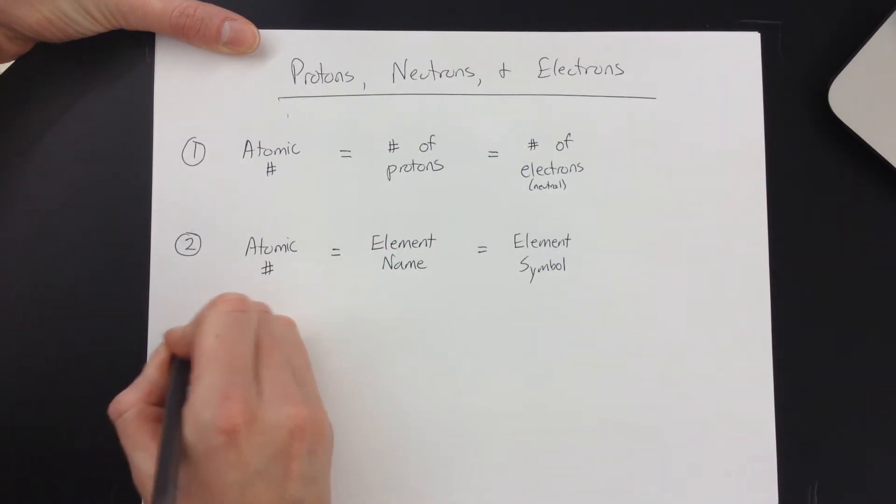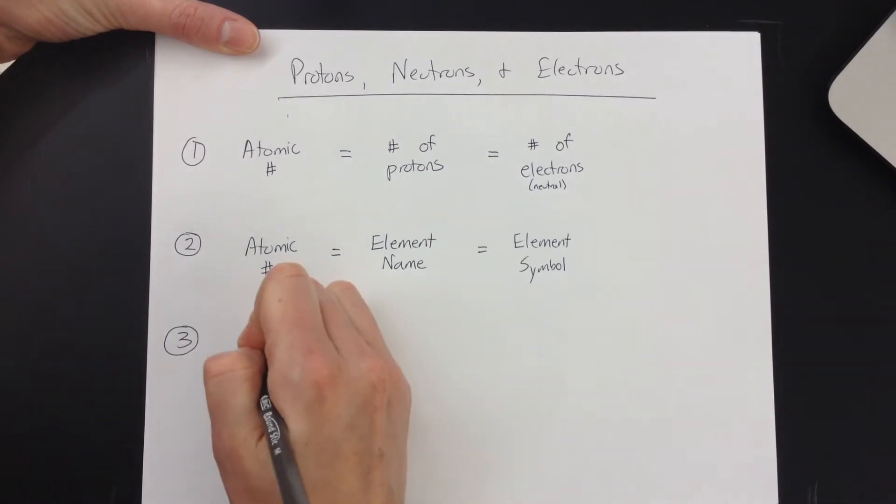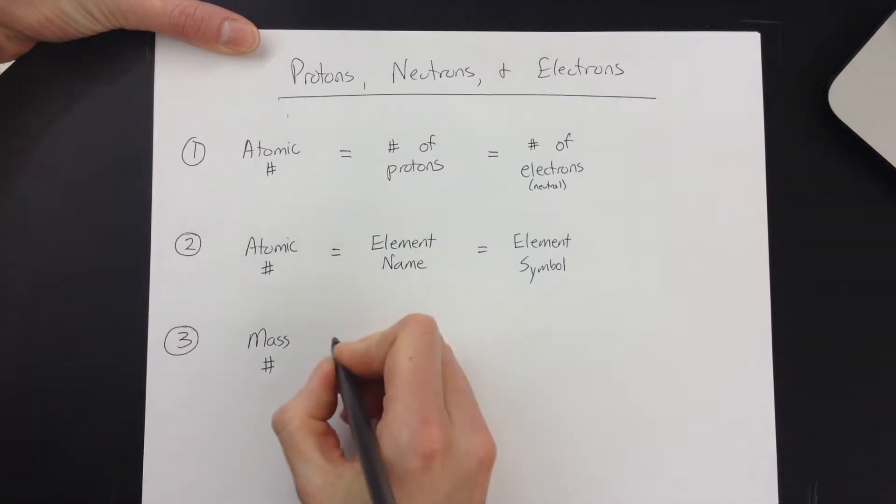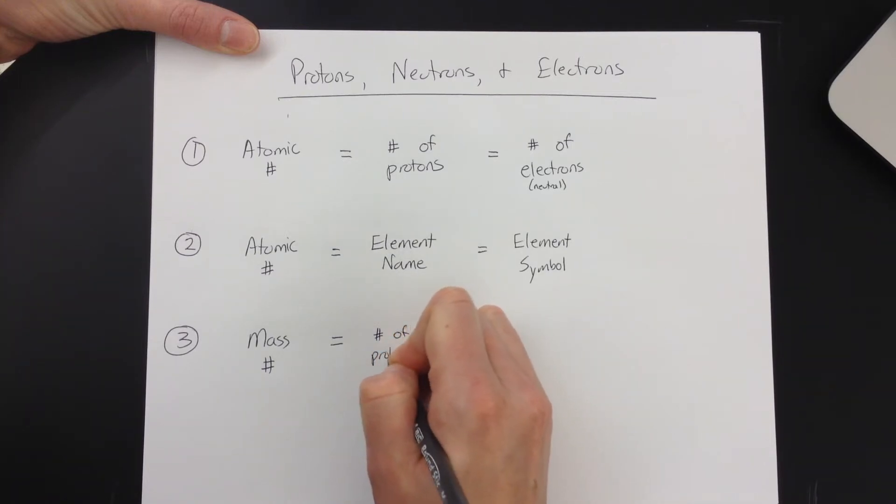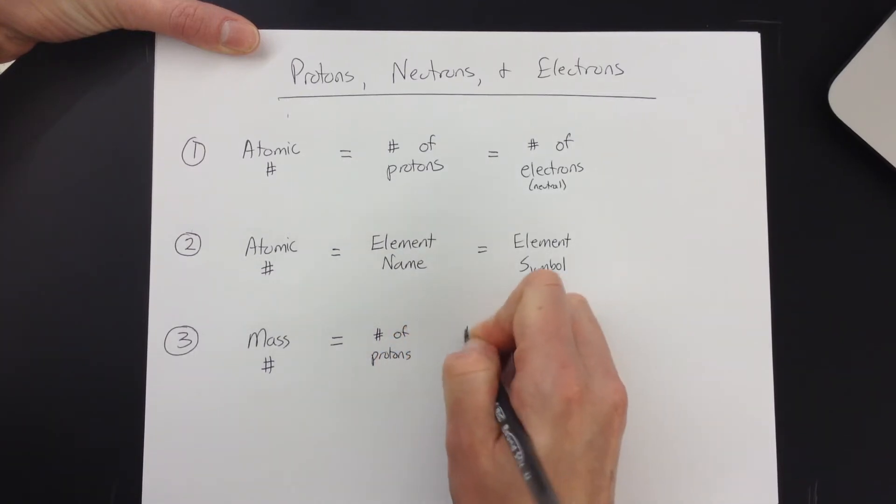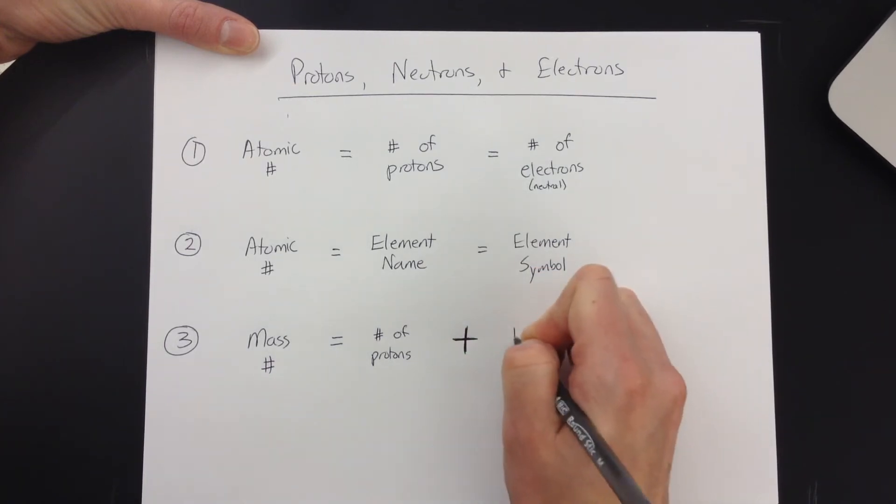So then the last thing that we need is those gosh darn numbers of neutrons. And that comes from the mass number. So the mass number is not the number of protons, it's not the number of electrons, and it's not the number of neutrons, which makes it a little irritating. It is the number of protons plus, and I'm going to try and darken this in as much as I can here, it's plus the number of neutrons.